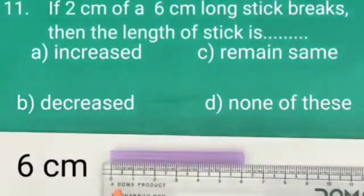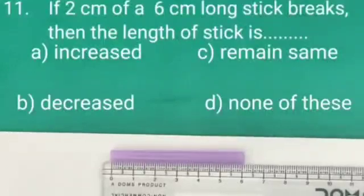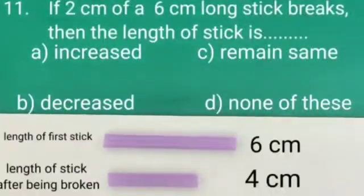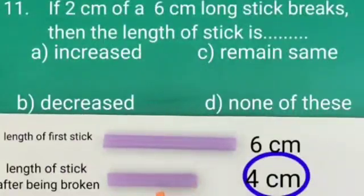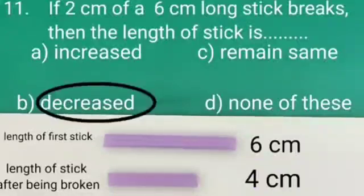We have a 6 cm long stick, from which 2 cm of stick get broken. After being broken, the length of stick remain 4 cm, which is less than the former stick. And which is our option B. So we will tick on option B.